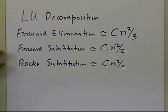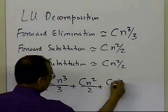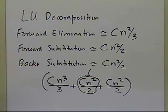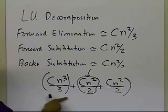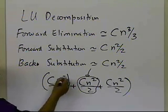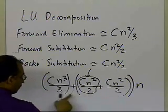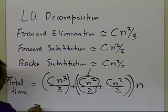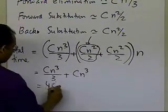So LU decomposition would take more time if done only once, because we have forward elimination steps, forward substitution steps, and back substitution steps — giving a total of cn³/3 plus cn²/2 plus cn²/2. However, the key point is that the LU decomposition of the A matrix only has to be done once, while the forward substitution and back substitution have to be done n times. So the total time becomes cn³/3 plus n times cn², which works out to approximately 4cn³/3.